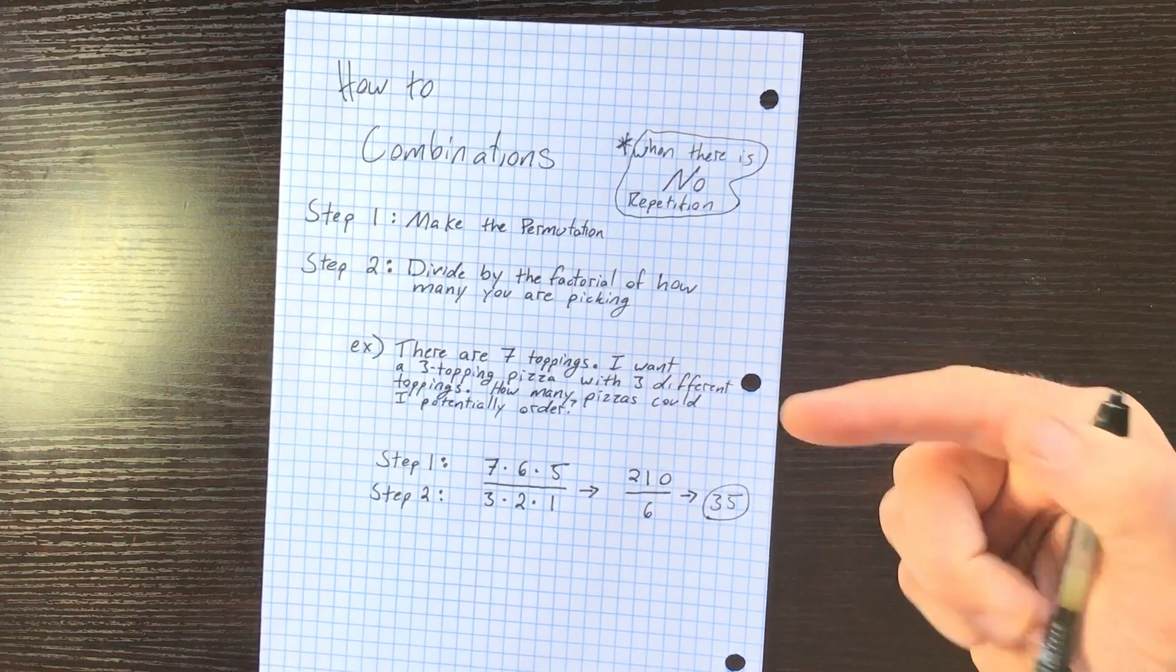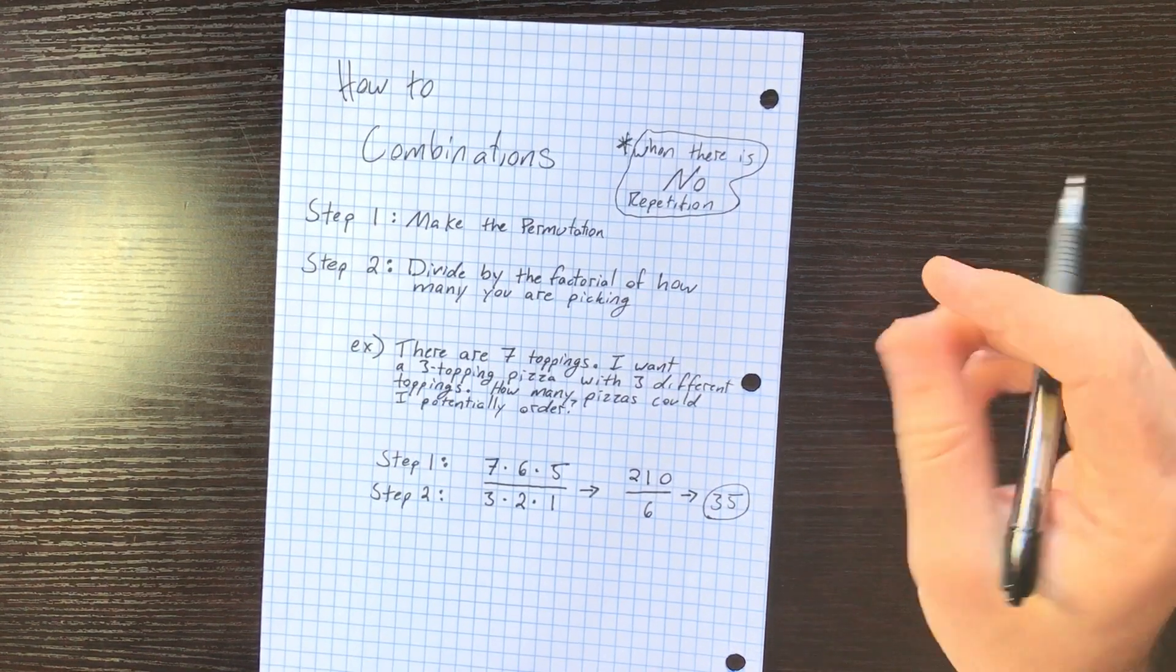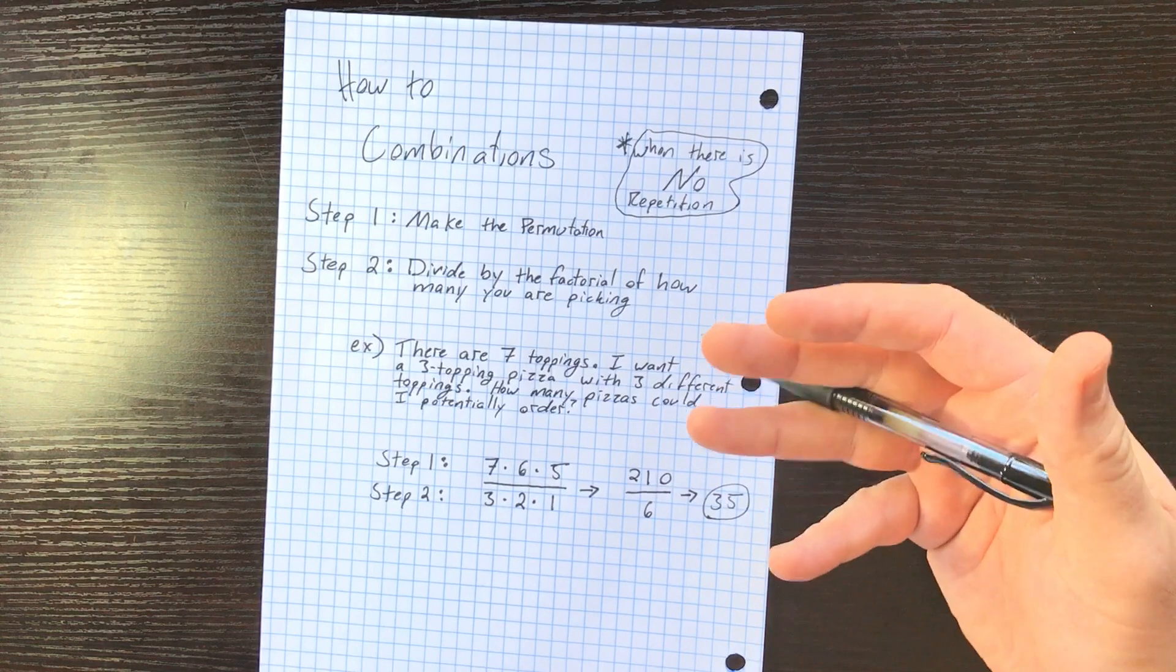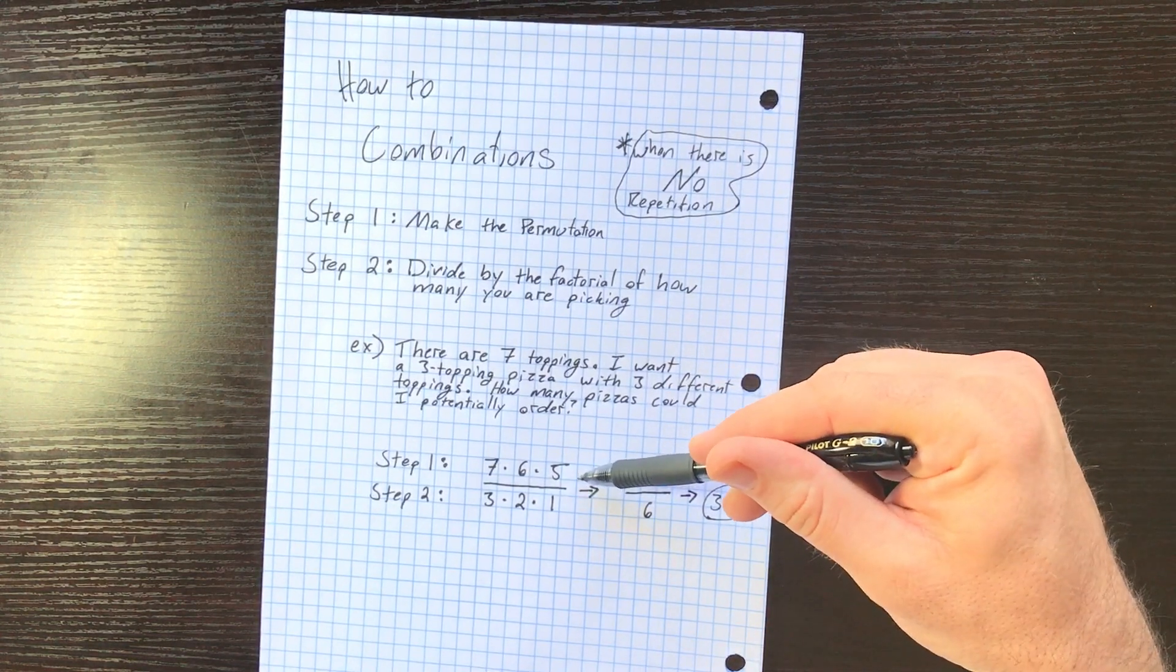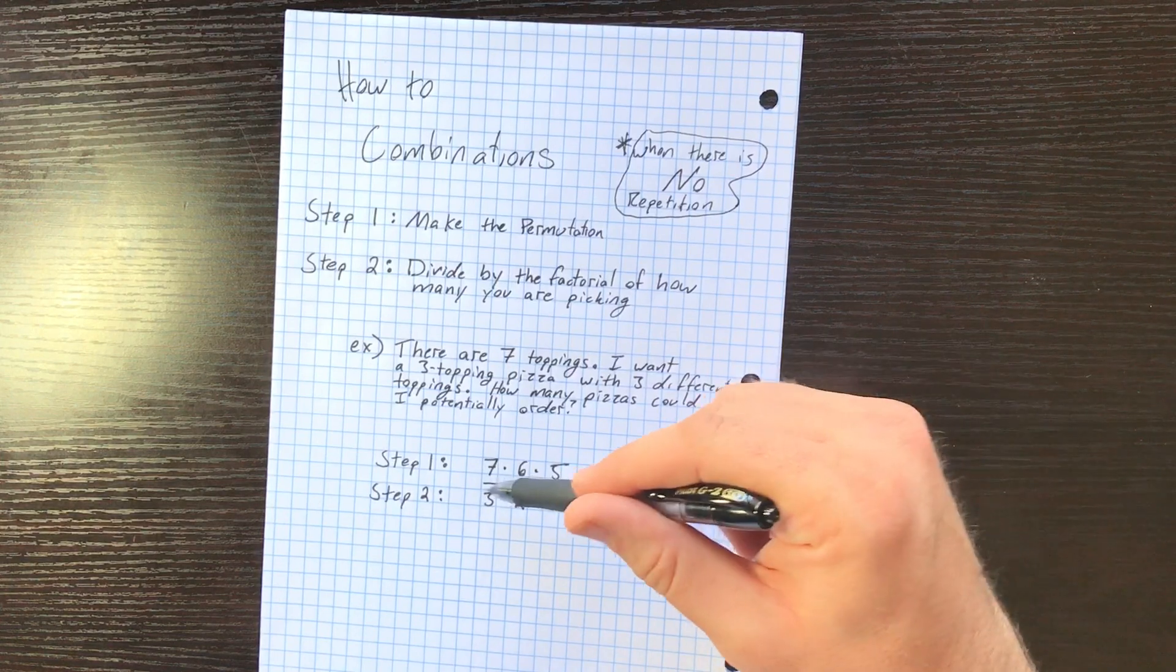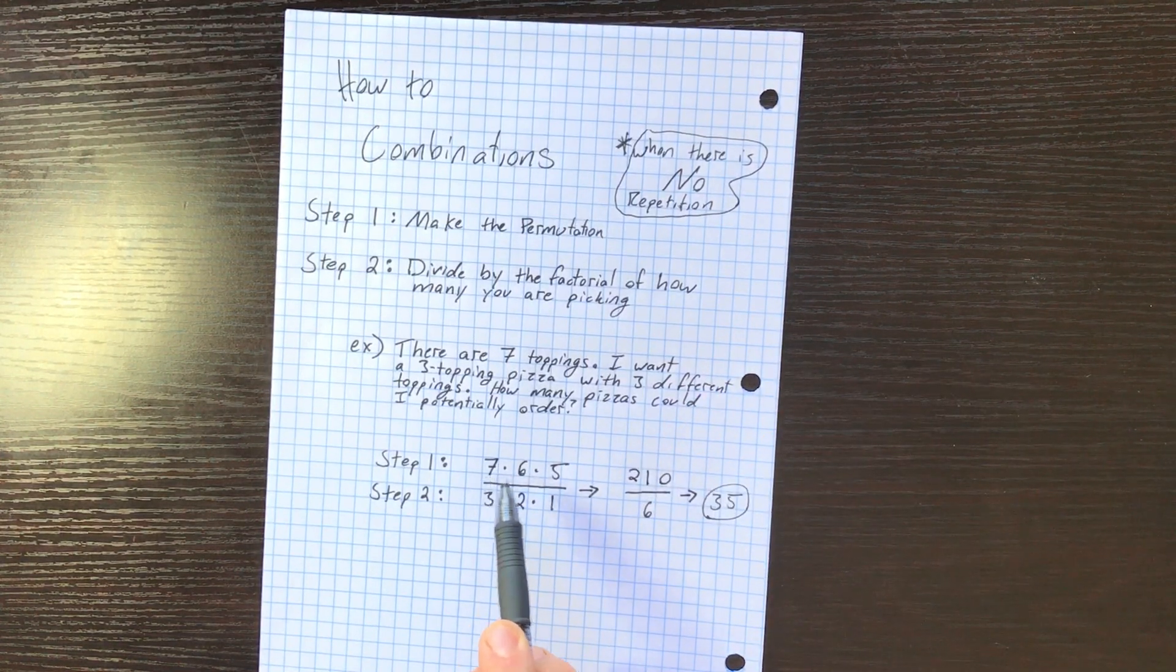And since it doesn't really matter the order, we could have pepperoni, sausage, and peppers, or have peppers, sausage, and pepperoni, and we're gonna get the same pizza. It doesn't significantly change the result, so we're dealing with a combination. Two steps: Step 1, let's make the permutation as normal.